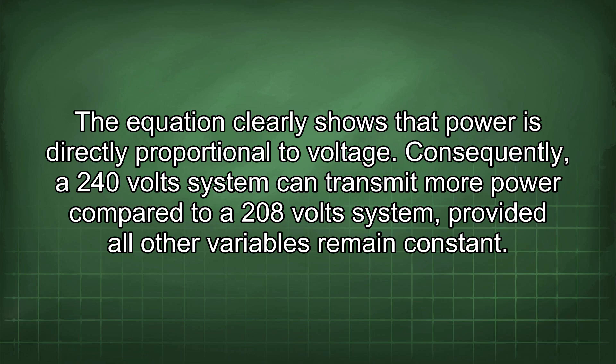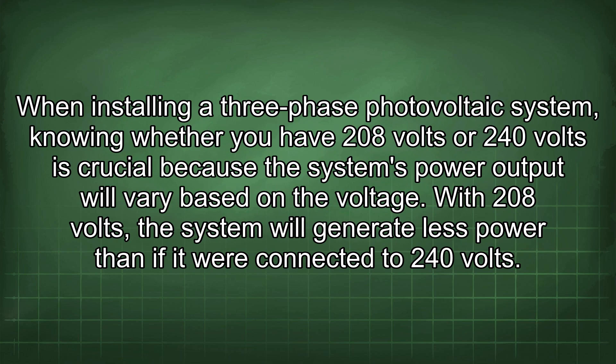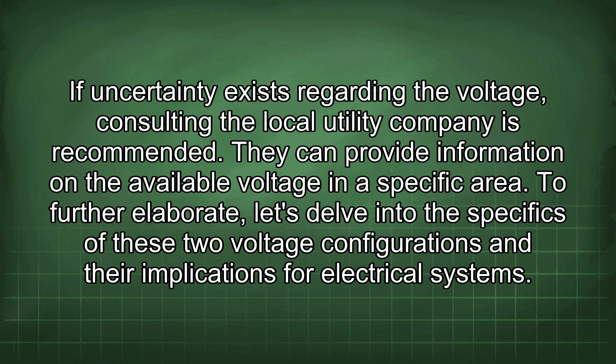Consequently, a 240-volt system can transmit more power compared to a 208-volt system, provided all other variables remain constant. When installing a three-phase photovoltaic system, knowing whether you have 208 volts or 240 volts is crucial because the system's power output will vary based on the voltage. With 208 volts, the system will generate less power than if connected to 240 volts. If uncertainty exists regarding the voltage, consulting the local utility company is recommended, as they can provide information on the available voltage in a specific area.